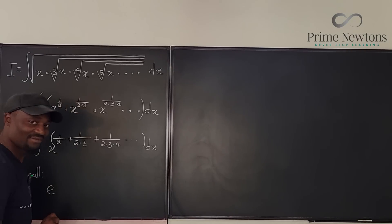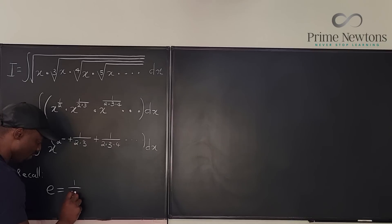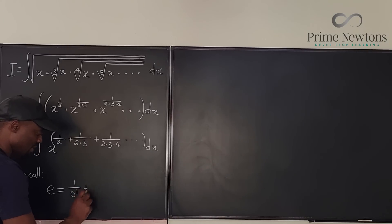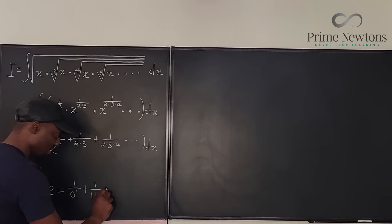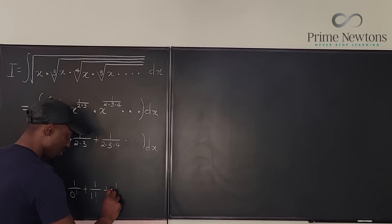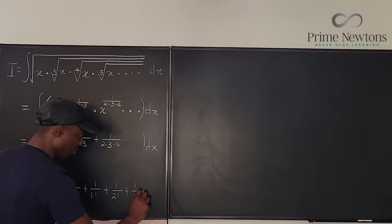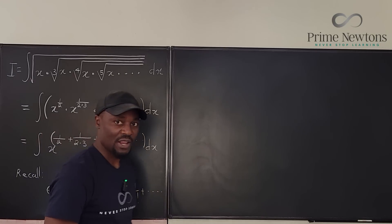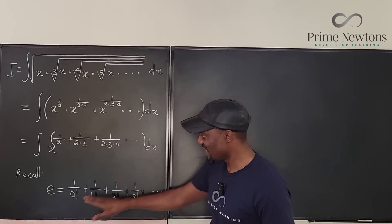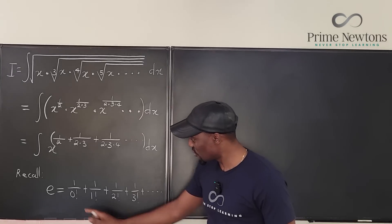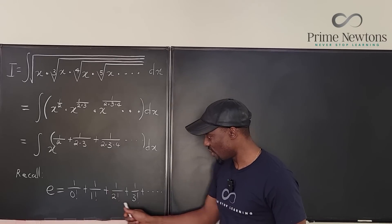Let's recall that e is equal to 1/0! + 1/1! + 1/2! + 1/3! + ... going on perpetually. So you can tell that what we have here is not e exactly, because we didn't start from the 0! or 1! terms — we started from 1/2!. If we can take care of those first two parts, the rest of it will be e.